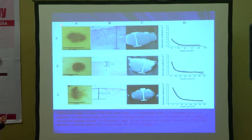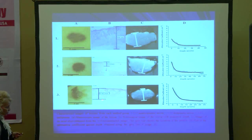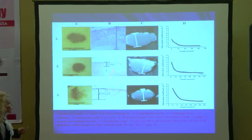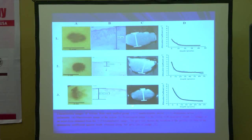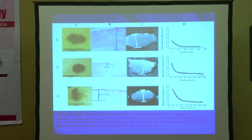Here we can see how it is. The first is the common image, the second is the dysplastic image, and the third is the melanoma. As you can see, we have the 3D reconstructions. You can see the graphs showing a big difference between the common nevus and the melanoma lesions.